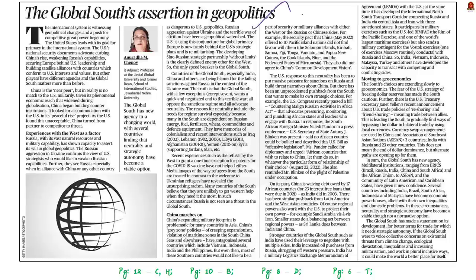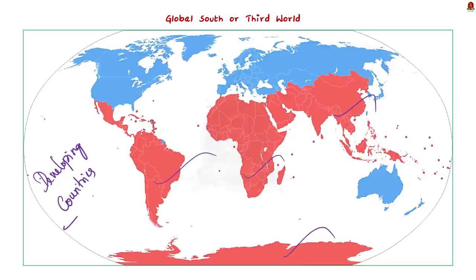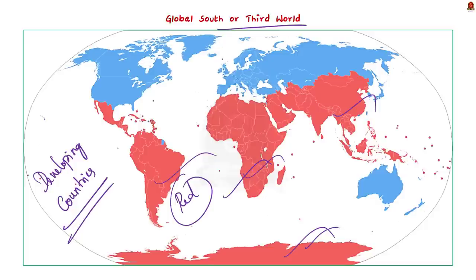Have a look at this editorial article. This editorial, as its title aptly says, focuses on the Global South's assertion in geopolitics. The term 'Global South' is used to identify regions within South America, Asia, Africa, and Oceania. The Global South mainly includes the developing countries, also called the third world countries. In the map shown here, the areas highlighted in red represent the third world and Global South countries.